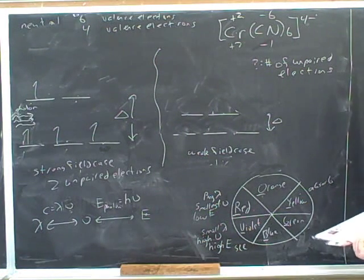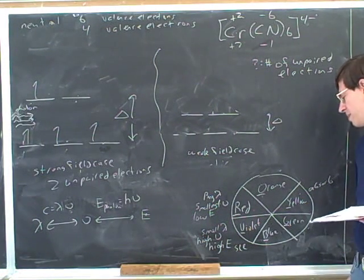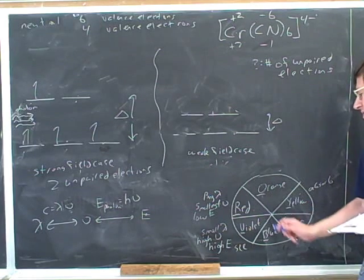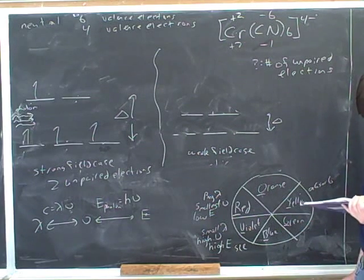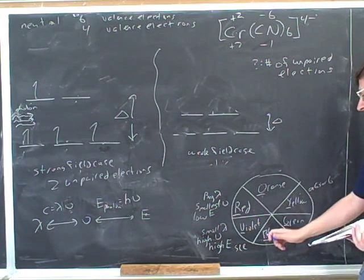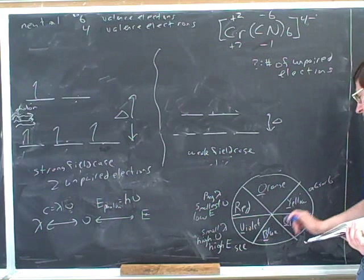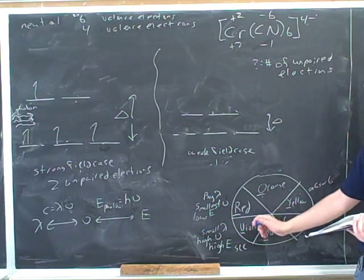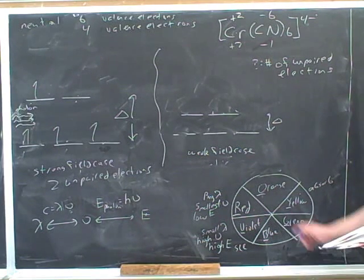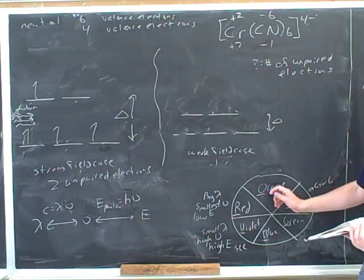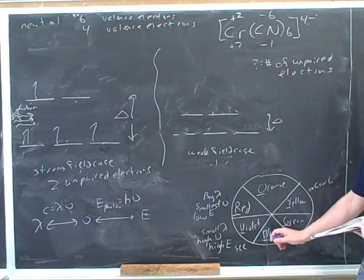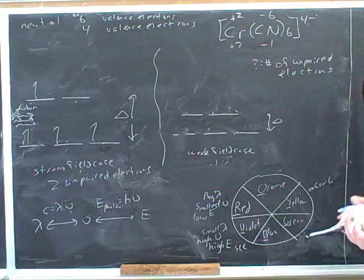A little terminology: the colors that are opposite to each other are called complementary colors. Orange and blue are complementary, and yellow and violet are complementary. So when a color is absorbed, the color that you perceive is the color that is complementary to the absorbed one.